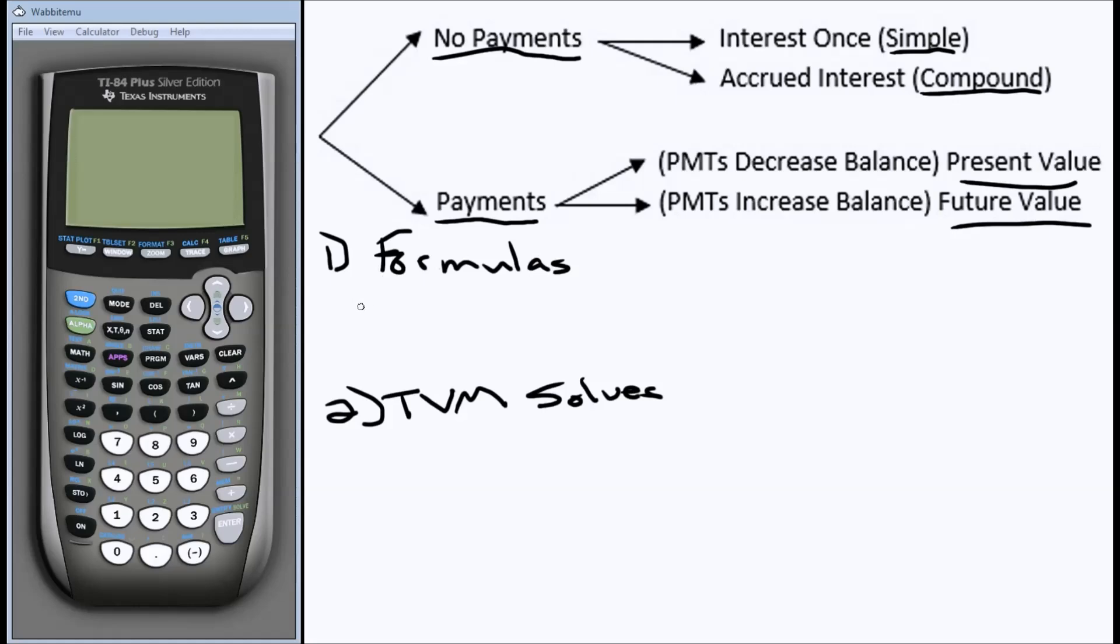There are two different types of problems that require you to use formulas. The first is any simple interest problems. Any simple interest problems require a formula to solve. As well, any of the compound problems that are compound continuously. These are the only two types of problems where you have to have a formula to use them, and we have videos that should show you how to solve each of the different types of problems using those formulas.